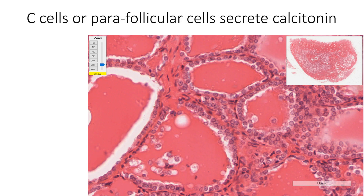The second type of cells we see in the thyroid gland are the C cells or parafollicular cells. They are either arranged along with the follicular cells on the basement membrane of the follicle but not quite reaching the lumen, or they are found between the follicles as parafollicular cells. They are difficult to identify in routine hematoxylin and eosin stained sections but can be identified by their clear cytoplasm or by their parafollicular position. These cells secrete calcitonin, which helps in calcium metabolism.